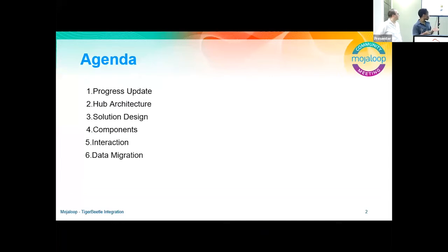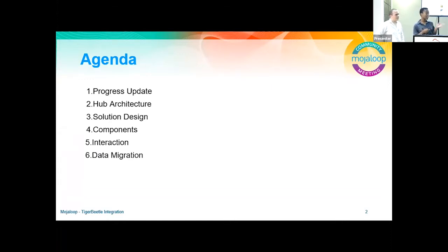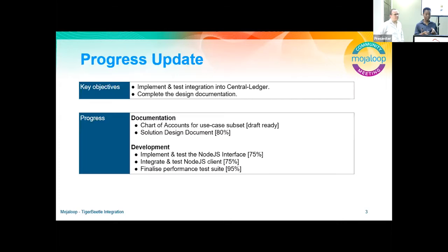I'll give an update on what we've done, what we wanted to do, and where we are now. We'll look at the architecture of a hub and exactly where the solution fits in. Jason will talk about how the components interact with Central Ledger as it is. And if we still have time, we'll talk about how to migrate or onboard Tiger Beetle into an existing environment.